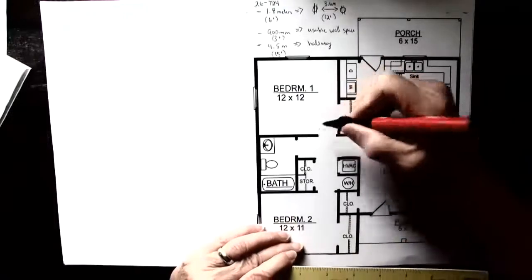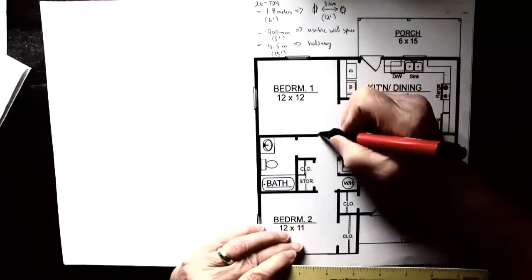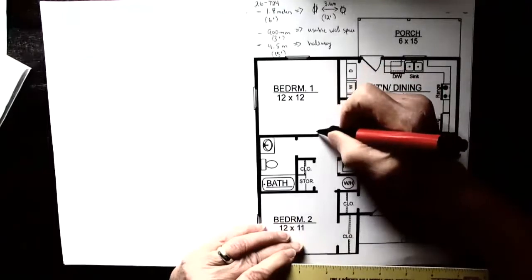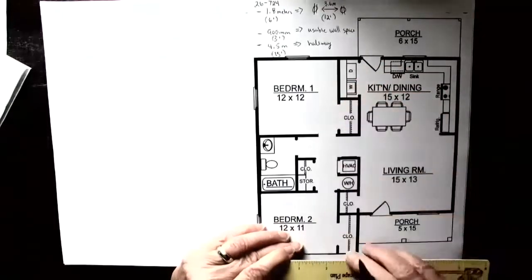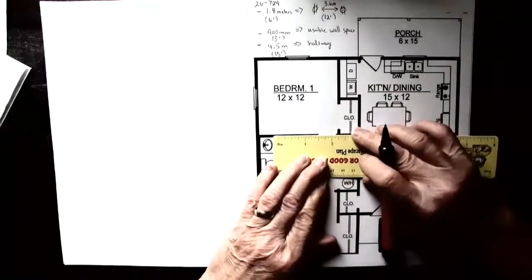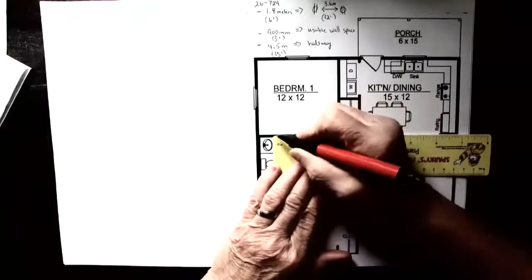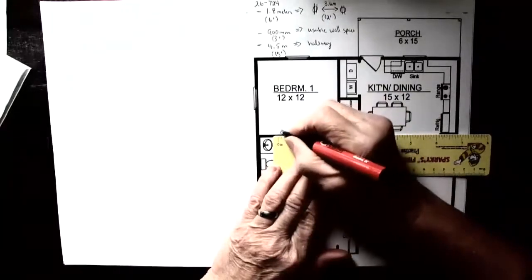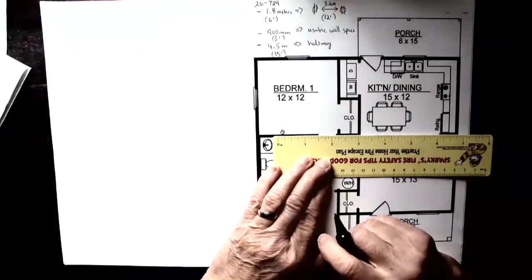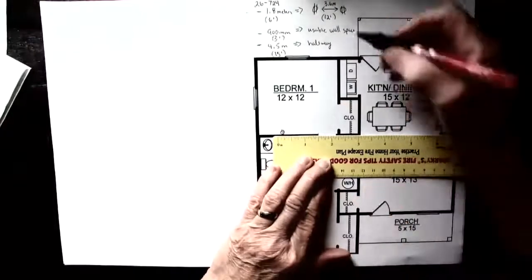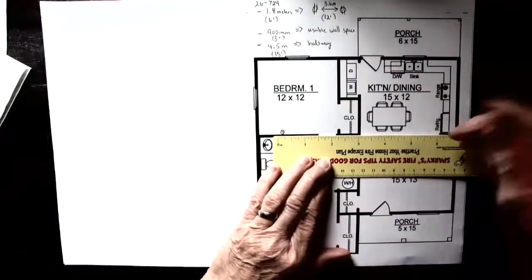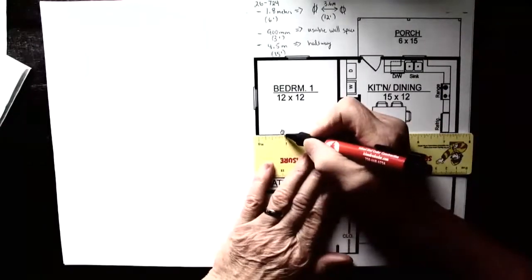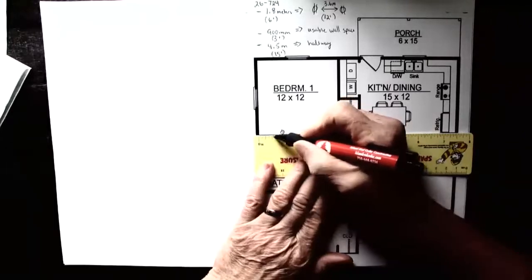Let's start with bedroom number one. When we first walk in the door, our maximum distance to the first receptacle can't be more than 1.8 meters or six feet. If each quarter inch is a foot, then my first receptacle has to be before that six foot mark. So I'm going to put it right here. This is the architectural symbol for a receptacle.